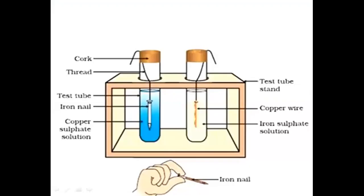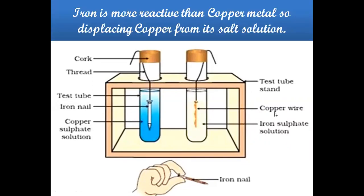The same activity can be seen in this picture representation. The initial color of copper sulfate solution is blue. When an iron nail is dipped in, after a while we observe a change in the solution color. The change in color of the solution helps us know the chemical reaction taking place in the test tube. This results in the formation of iron sulfate solution. Copper is displaced from the solution and is deposited on the iron nail as a brown precipitate.